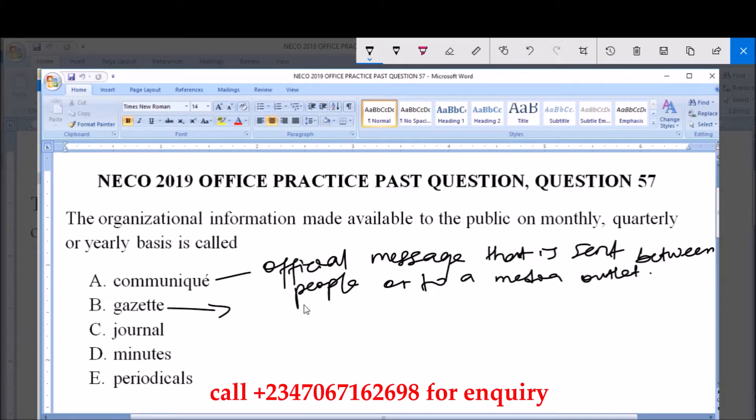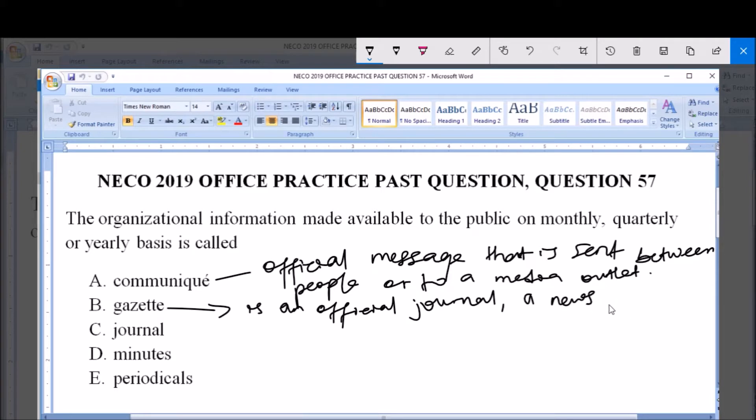Now, this is Gazette. Gazette is an official journal. It can also be a newspaper that is an organization newspaper of records published regularly.